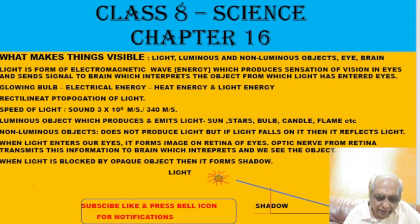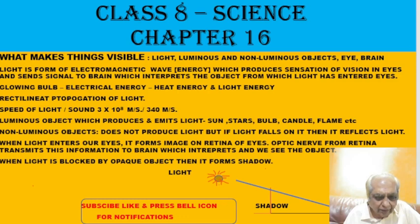Light is an electromagnetic wave — we will learn in detail in 12th standard what an electromagnetic wave is. It is a type of energy. When a bulb glows, it glows because electricity has been passed through it: electrical energy gets converted to heat energy, the filament becomes red hot and emits light. So light has come from electrical energy via heat energy.